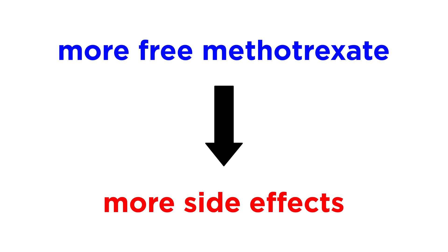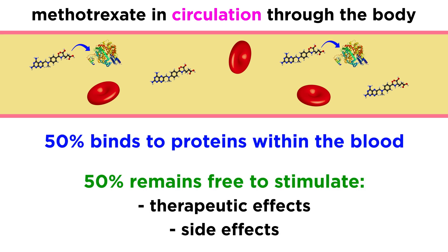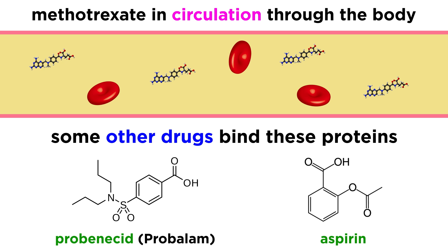Side effects increase with increased exposure to free methotrexate in the body. While circulating throughout the body, about 50% of methotrexate binds to proteins within the blood, while the other 50% remains free to stimulate both therapeutic effects and side effects. Other drugs which also bind these blood proteins, like probenecid, better known as Probelan, and salicylates such as aspirin, may displace methotrexate, leading to increased levels of the free unbound drug and therefore increased side effects. Concurrent treatment with a drug which displaces methotrexate in this way can be fatal, so it is important to speak to a physician about concurrent use with other medications.